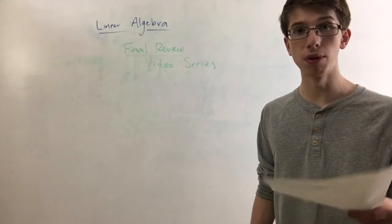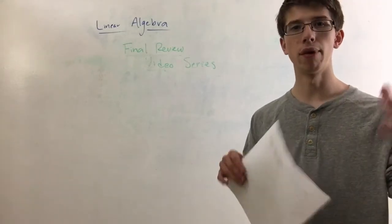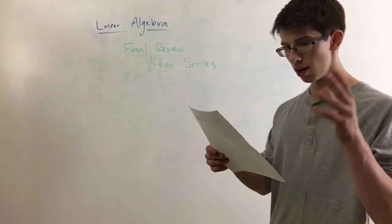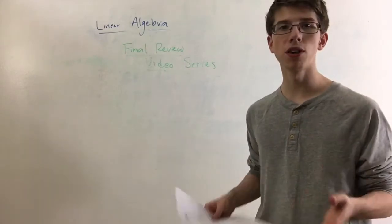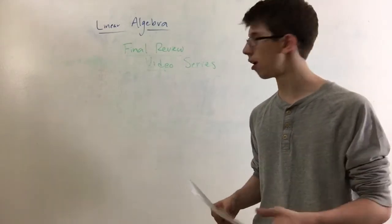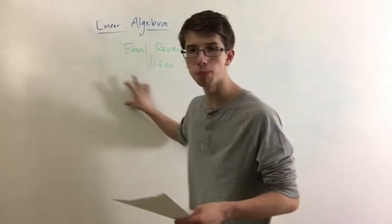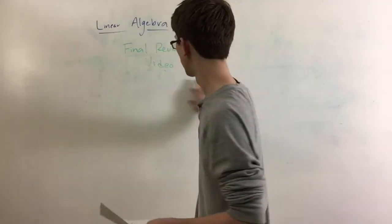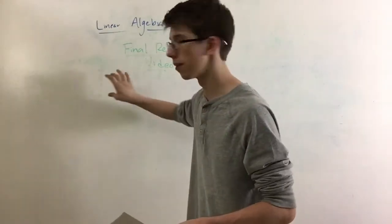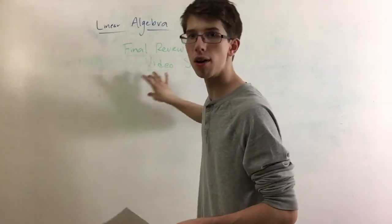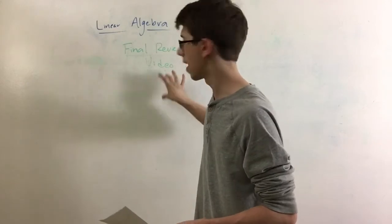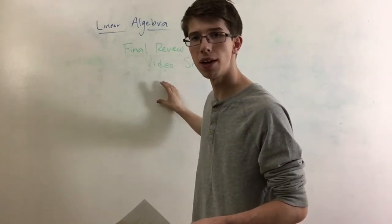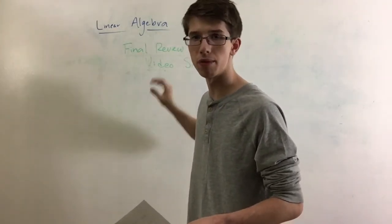What does it mean for two matrices to be row equivalent? They row reduce to the same REF or RREF. The next one is: what are pivots? Pivots are the first point in a row that is a non-zero value. So if you have 0, 0, 1, then that 1 is the first non-zero value and therefore is the pivot for that row.